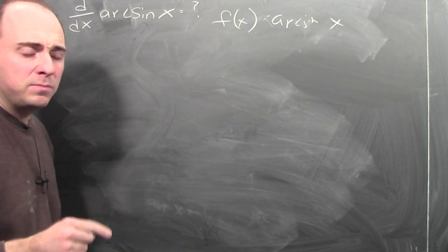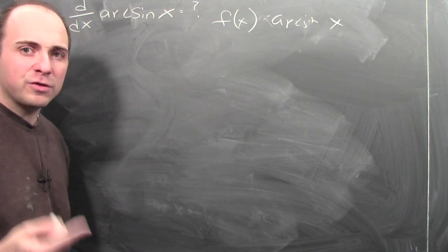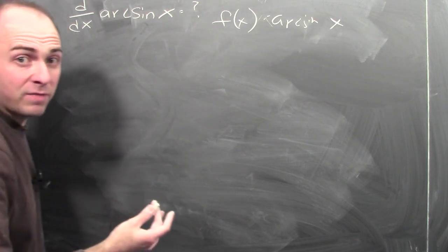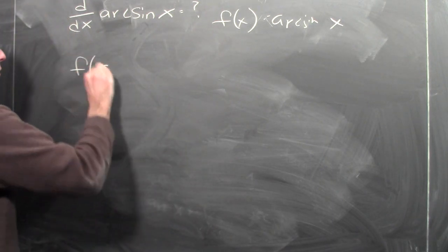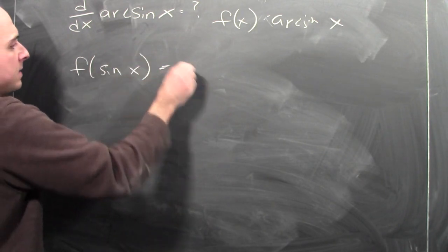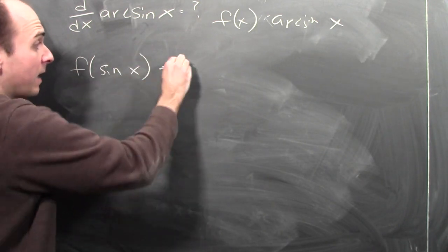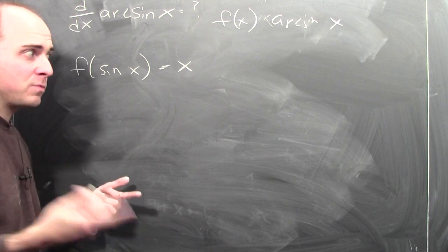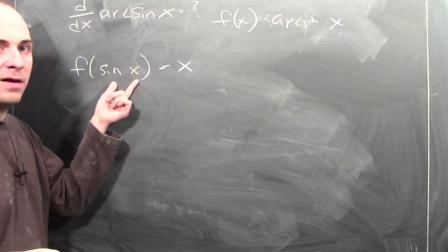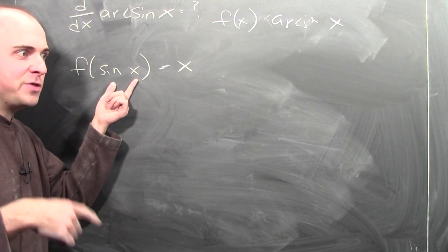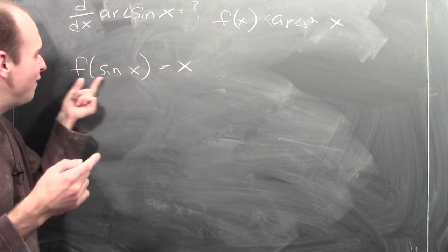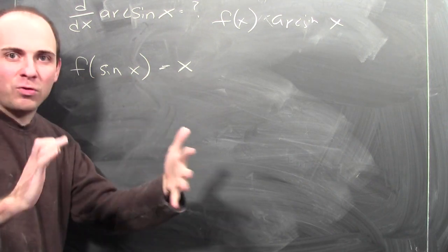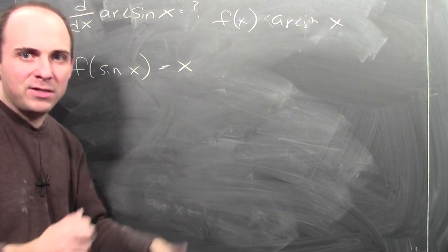What do I know about arcsine? Arcsine is the inverse function for sine. So, at least for a range of values of x, f of sine x is x. Arcsine tells me a value that I can take the sine of to get the input to arcsine. So if I evaluate arcsine at sine x, I get x — at least over a particular range of values of x.